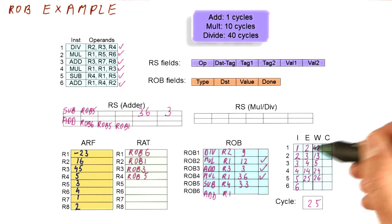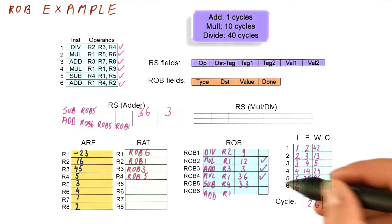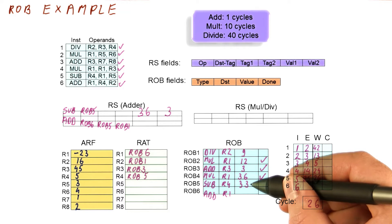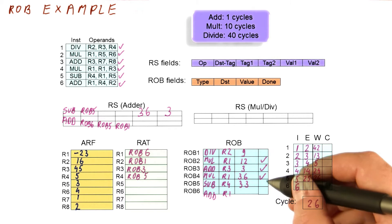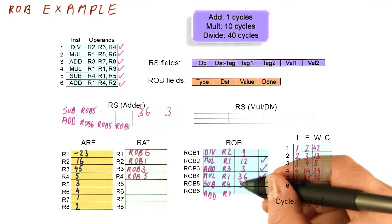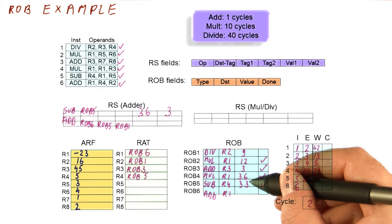Now the next thing that will happen is either this or this will be broadcast. Cycle 26 is the next cycle. So let's see what happens then. In cycle 26, the subtract broadcasts the value of 33 under the name of ROB5. So we mark it as done, 33 gets put here and 33 under the name ROB5 gets broadcast.